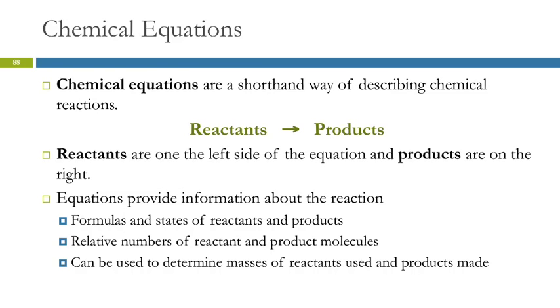The sorts of information that we find in chemical equations: we'll get the formulas of the reactants and products, the chemical formulas. We'll often have the states, gas, liquid, solid, aqueous. We'll get the relative numbers of molecules of each reactant and product. And then from that information, we can figure out the masses of reactants that are used and the masses of products that are formed. And that's where it becomes practical.